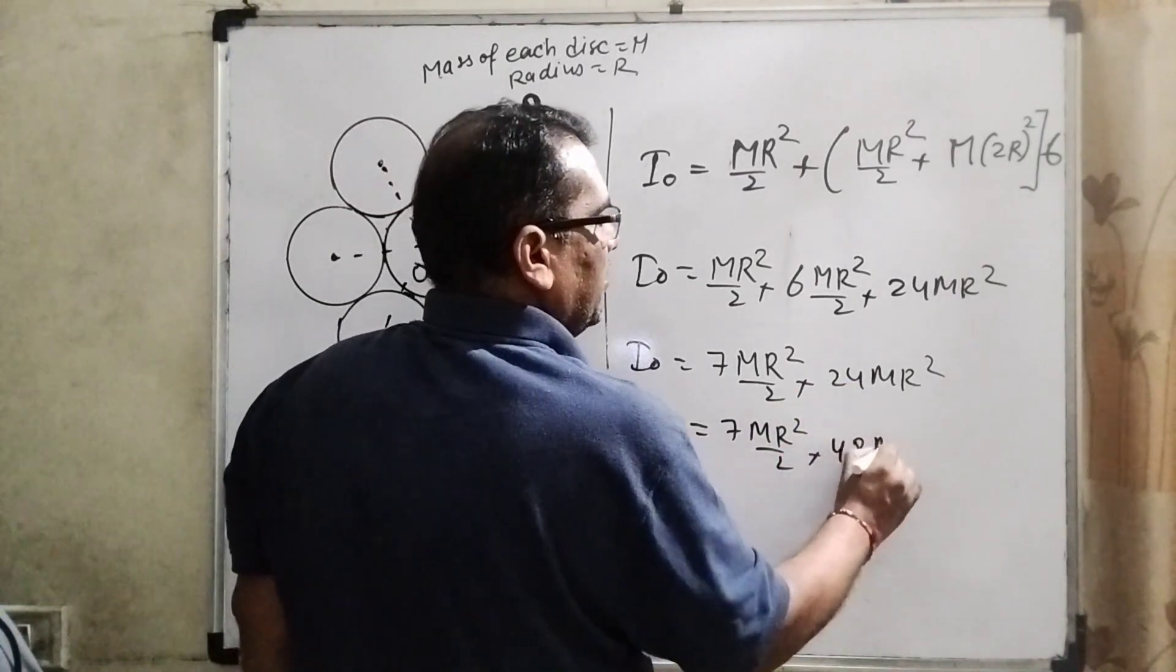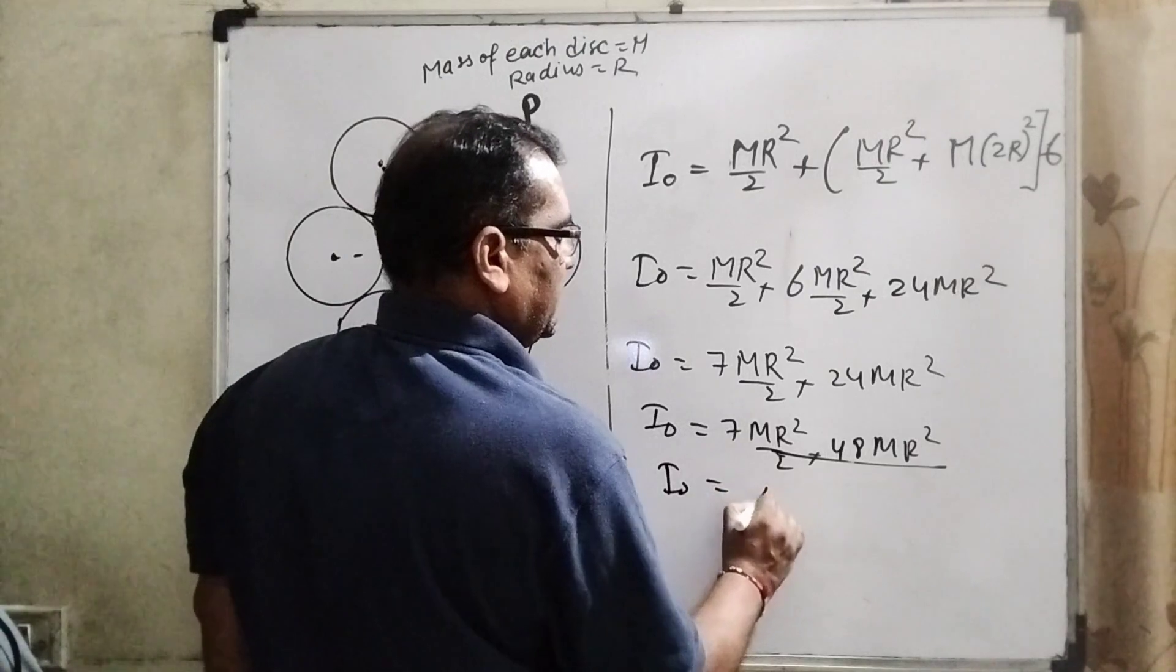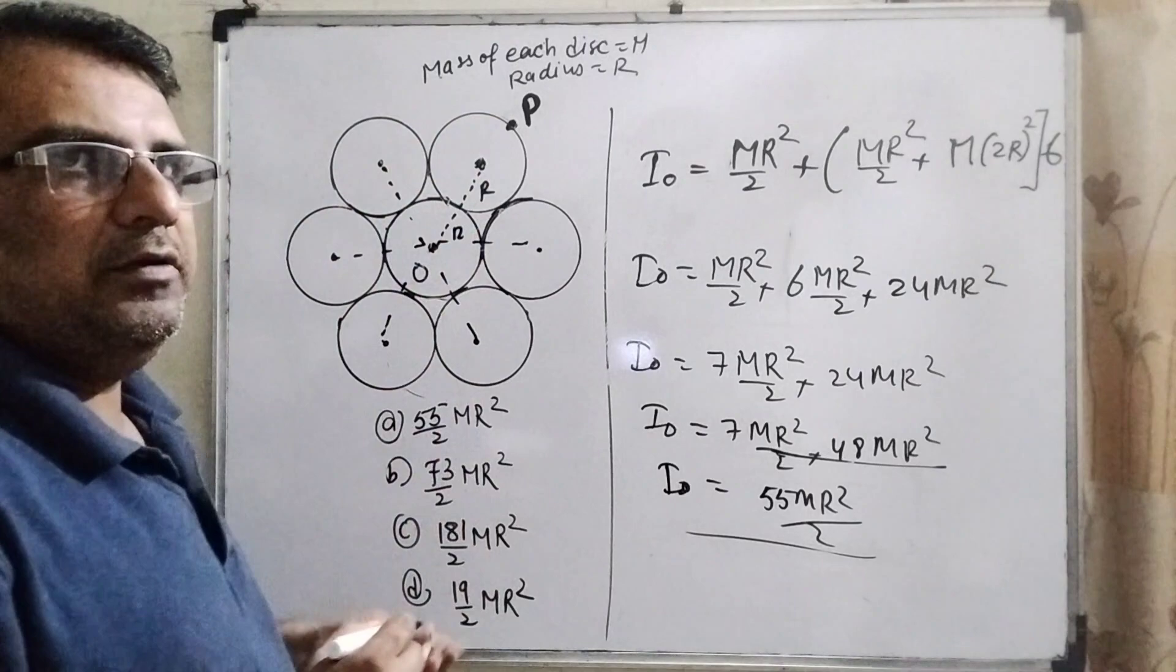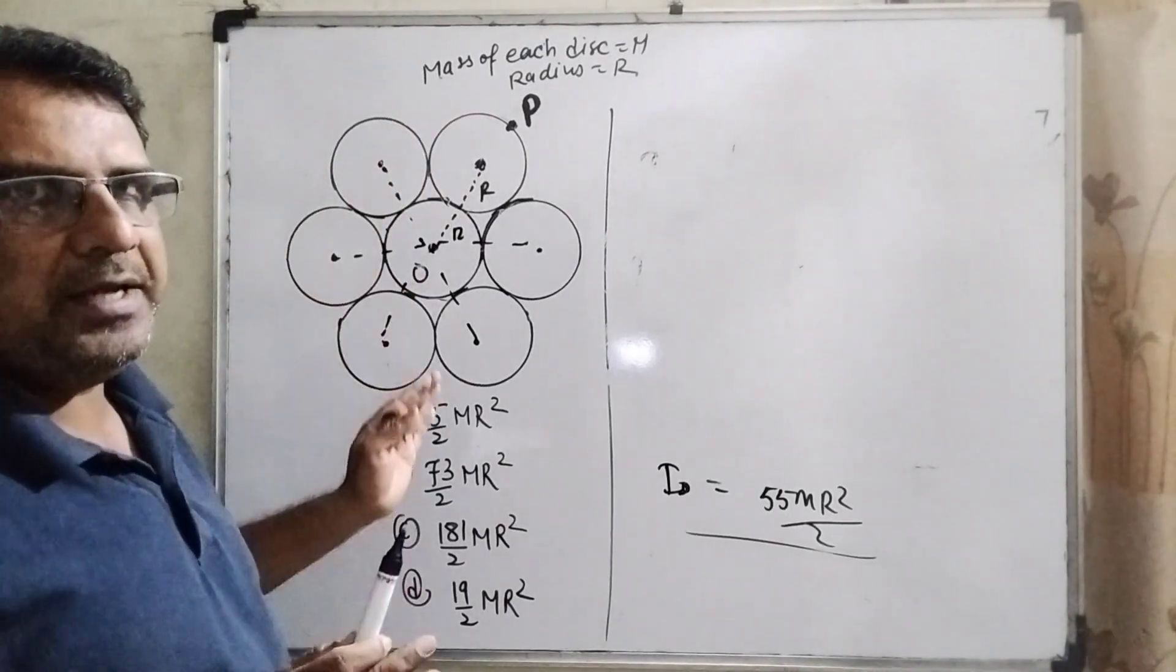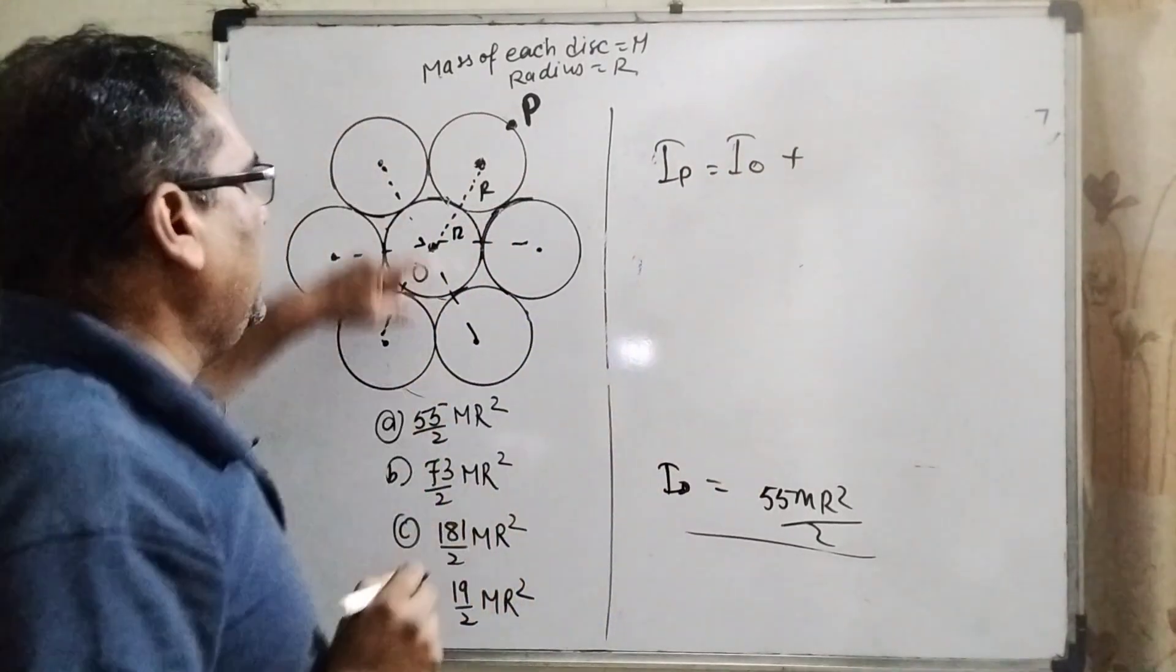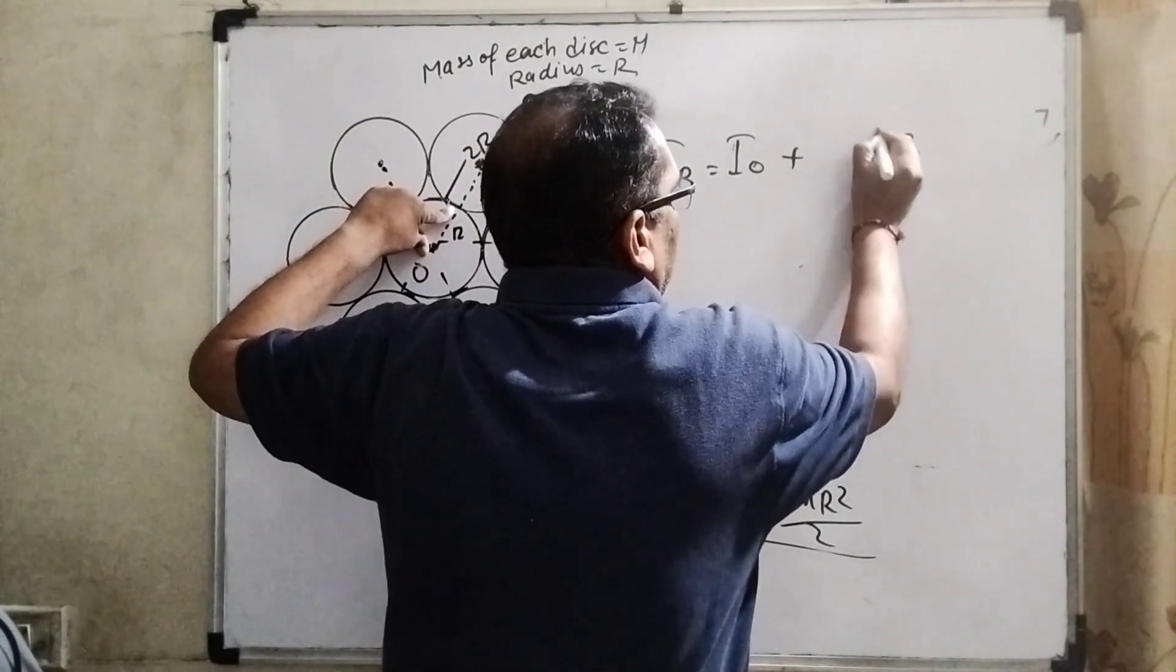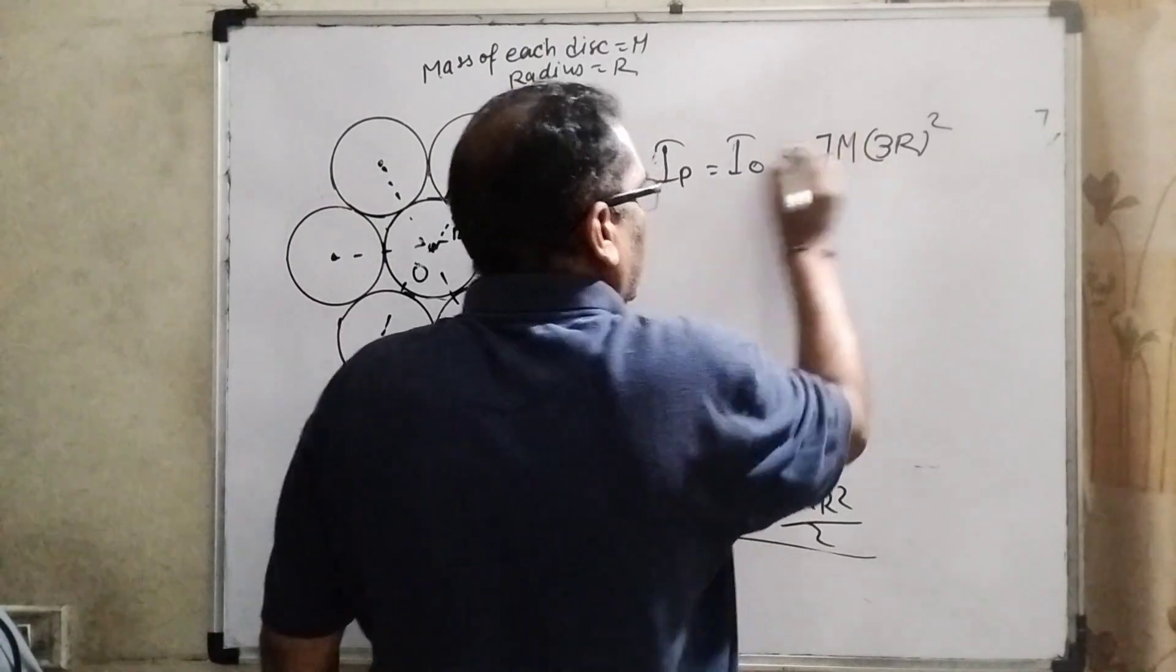plus 48MR². Taking LCM, I₀ becomes (48 + 7)/2 which equals 55MR²/2. Okay, now we have to find the total moment of inertia at point P. This center point is shifted here, so again we use the parallel axis theorem: Iₚ = I₀ + mass times distance squared. This point is shifted here, which means this is R, this total is 2R diameter, so 2R plus R means 3R distance.